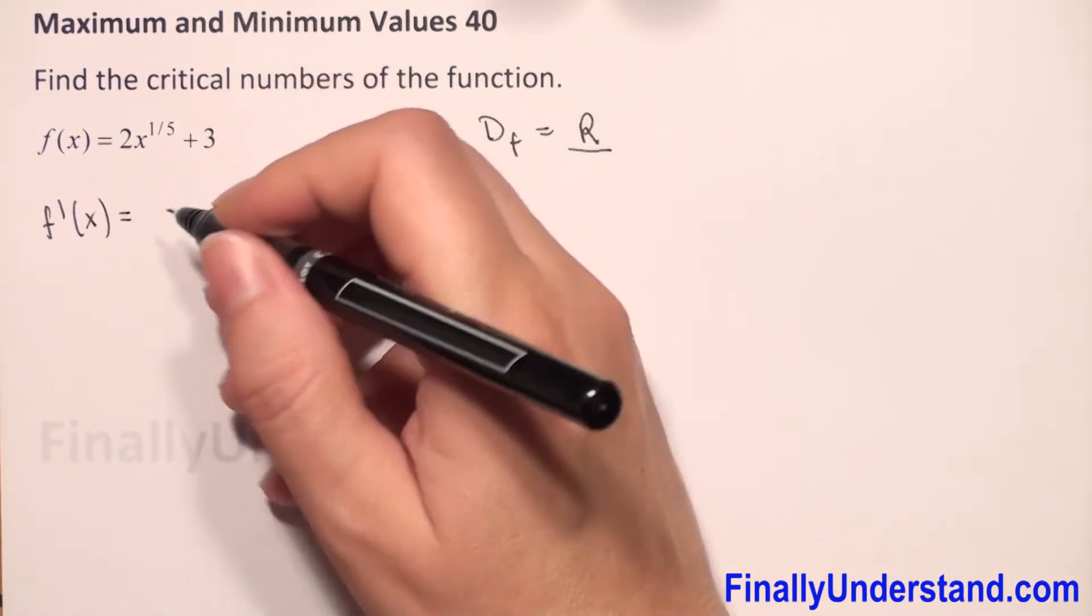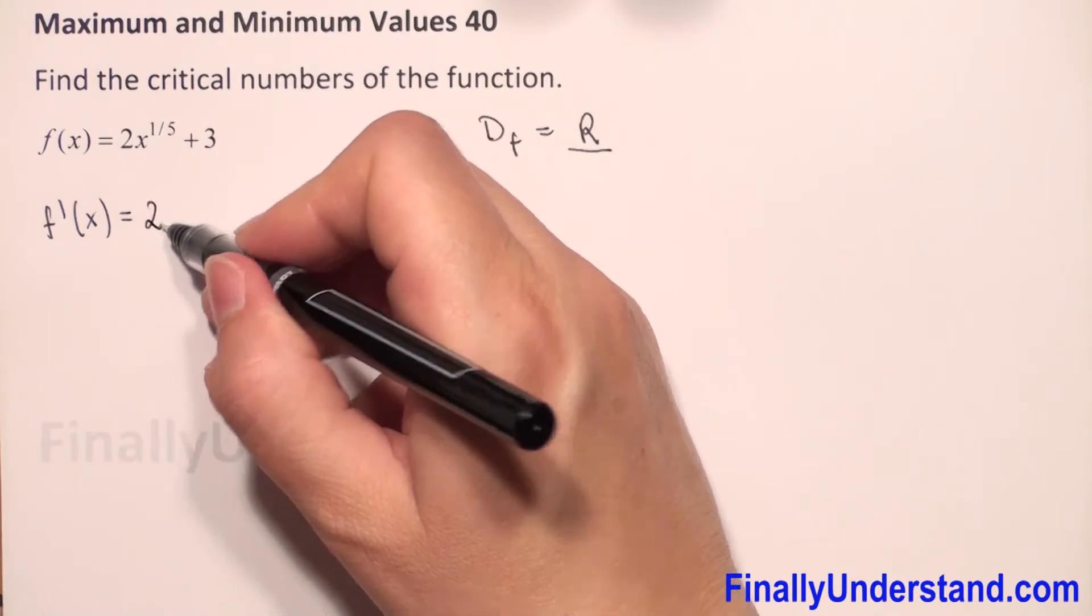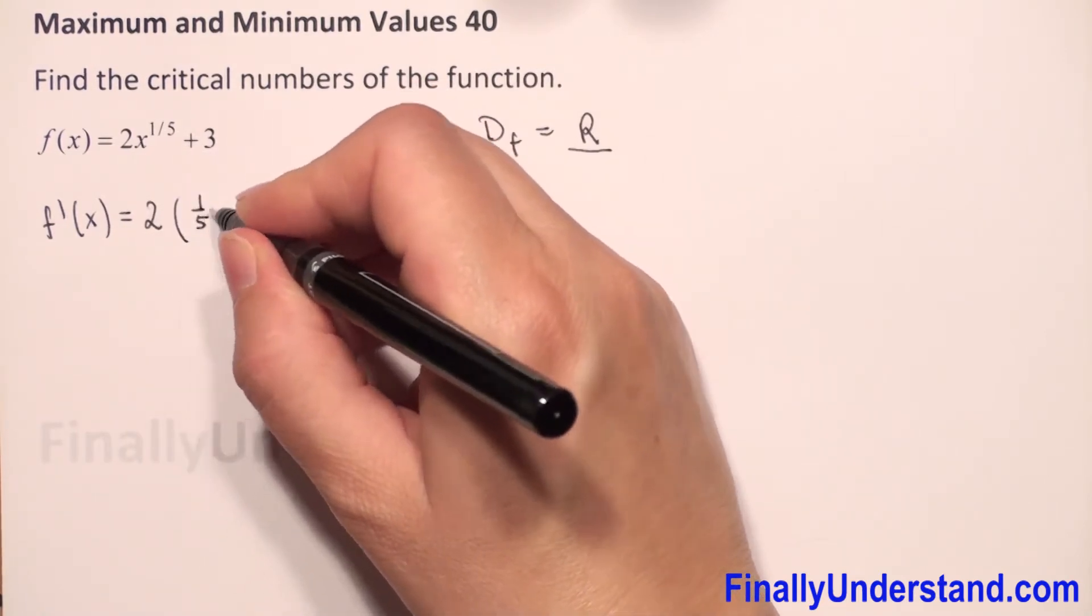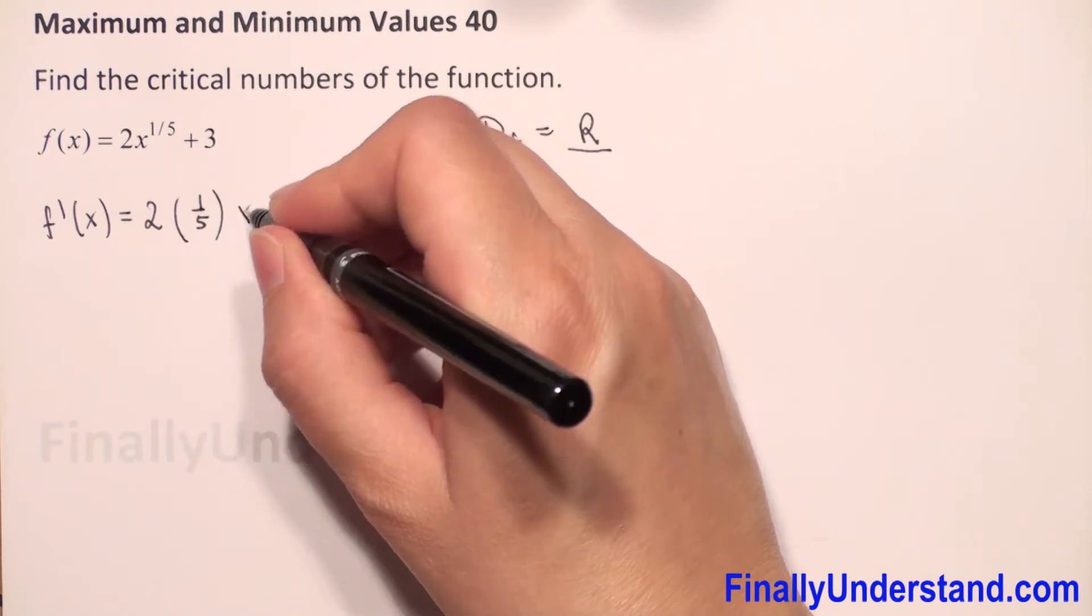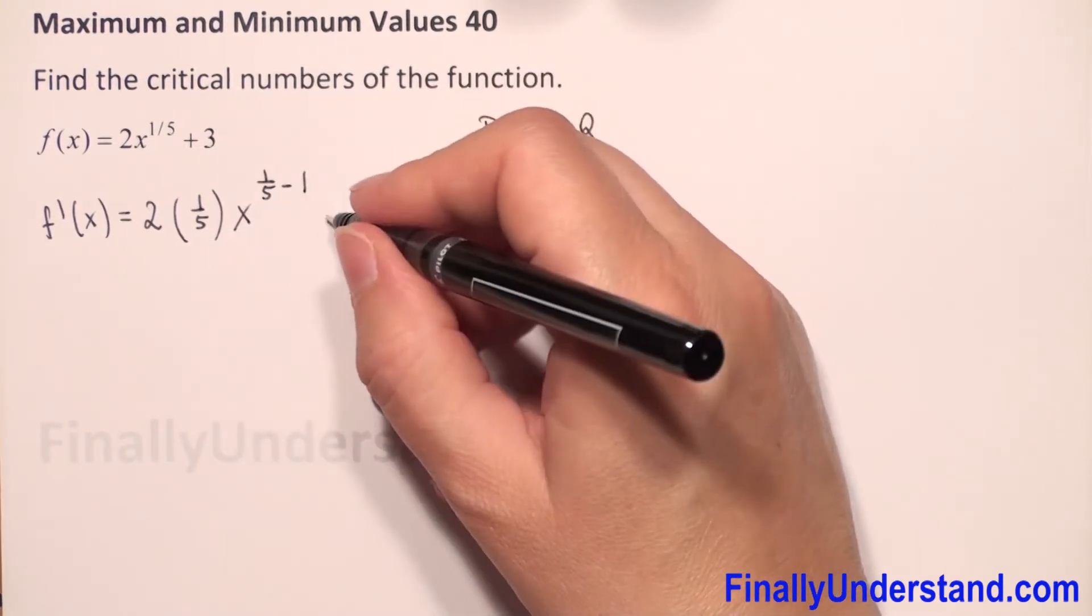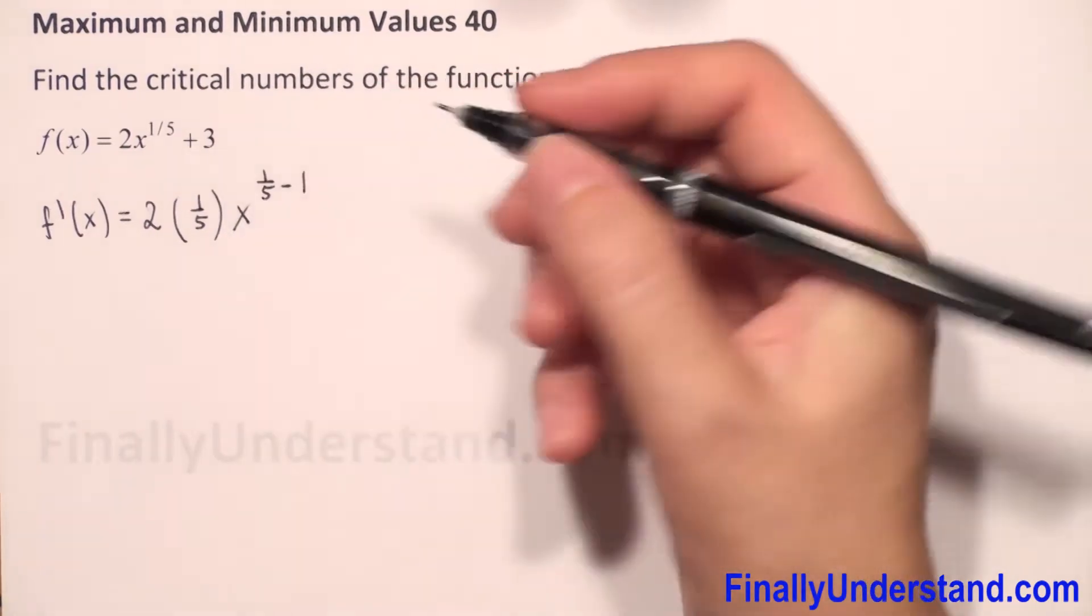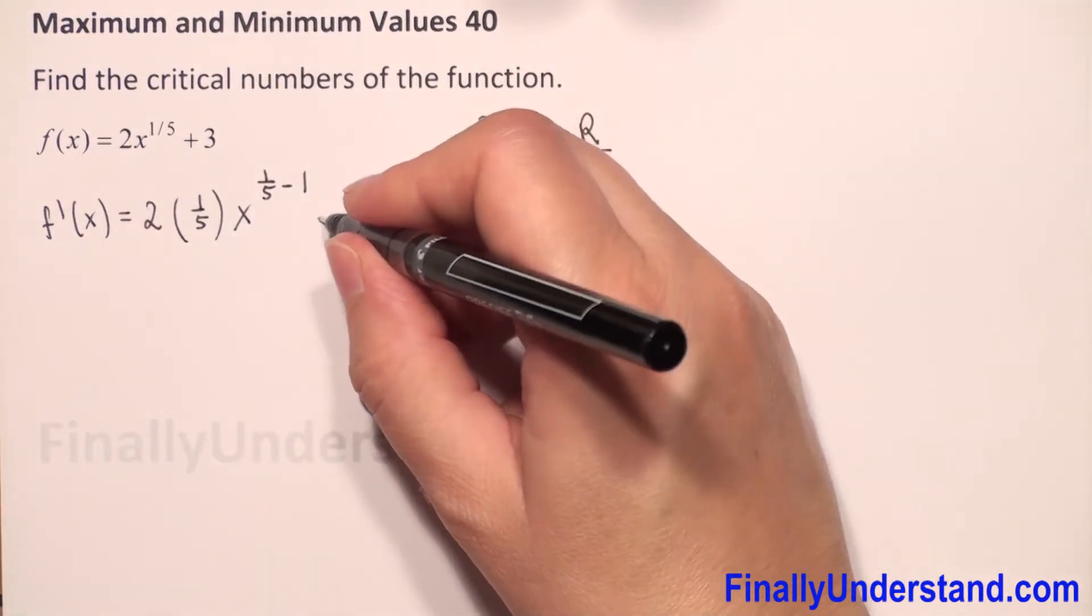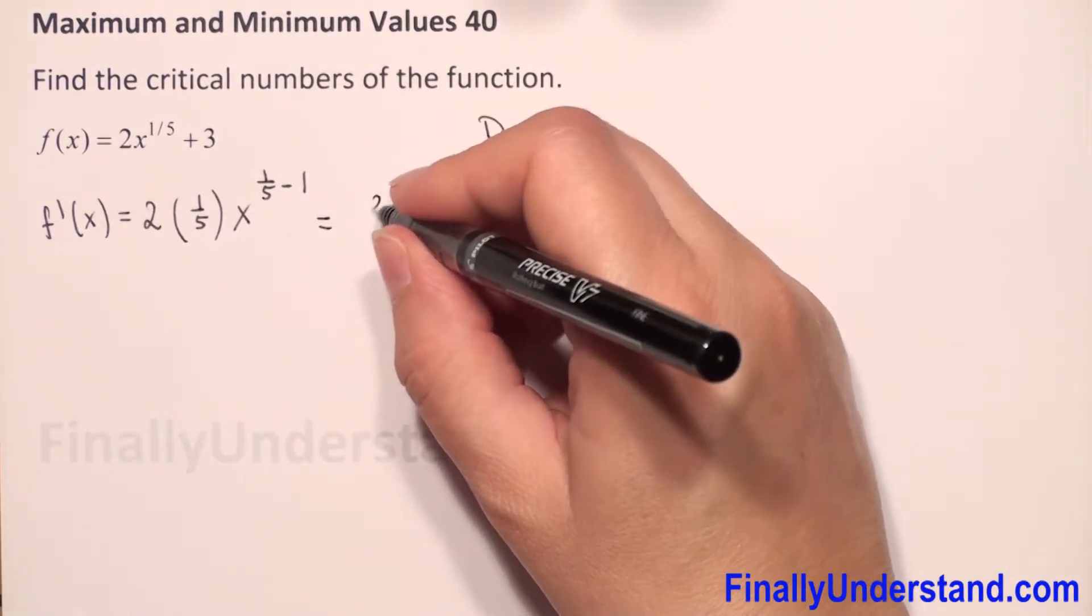So we have 2 times the power 1 over 5 times x to the power 1 over 5 minus 1, plus the derivative of 3 is 0, so we don't have to write. So this equals 2 over 5 times x to the power negative 4 over 5.